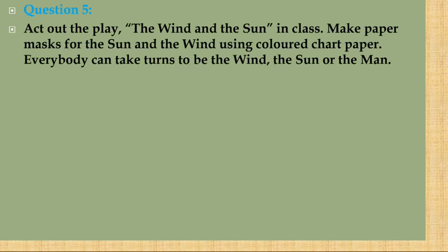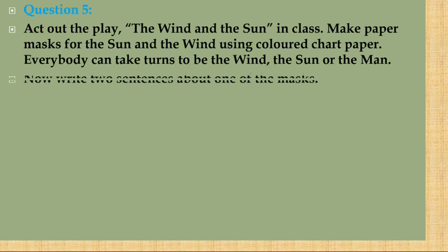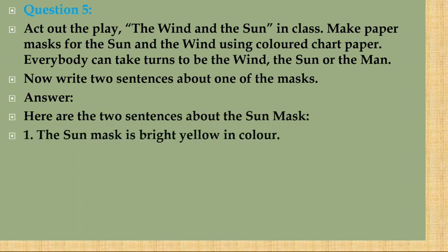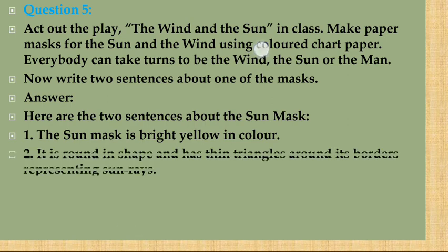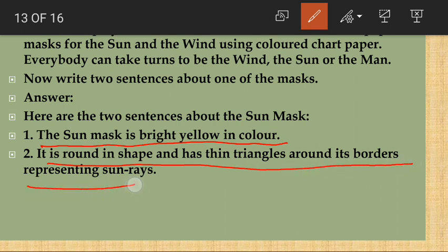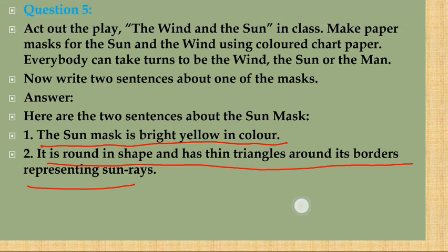Aapko ek sun face mask banana hai aur mask ke upar two sentences likhne hain. For example: 'The sun mask is bright yellow in color' and 'It is round in shape and has thin triangles around its borders representing sun rays.' Aap kuch bhi likh sakte ho as you wish.